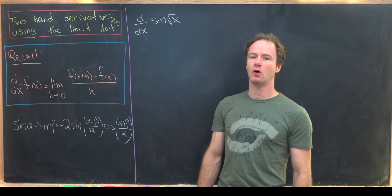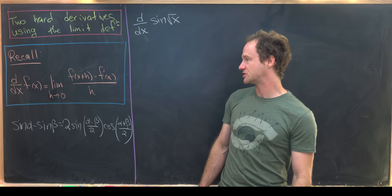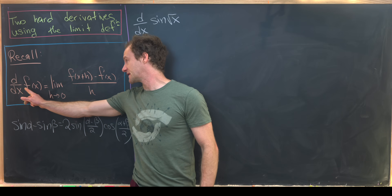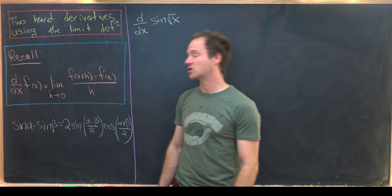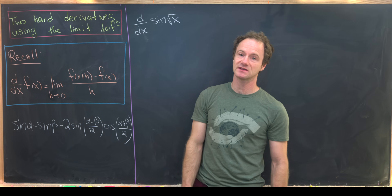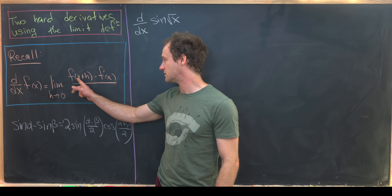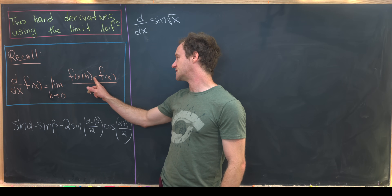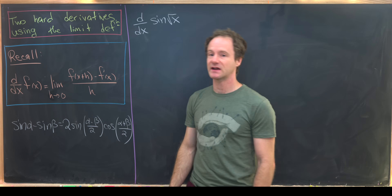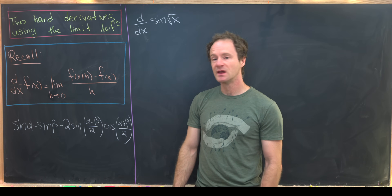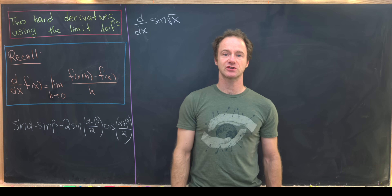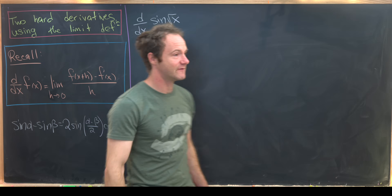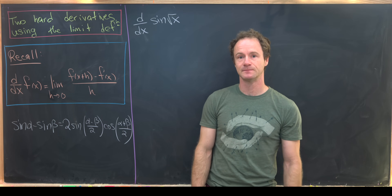Let's recall what the limit definition of the derivative is. The derivative with respect to x of a function f(x) is the limit as h goes to zero of [f(x+h) - f(x)] / h. The first function we'll look at is sine of the square root of x.